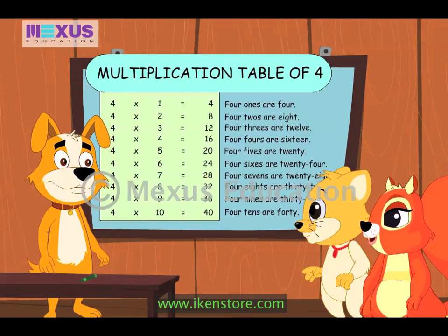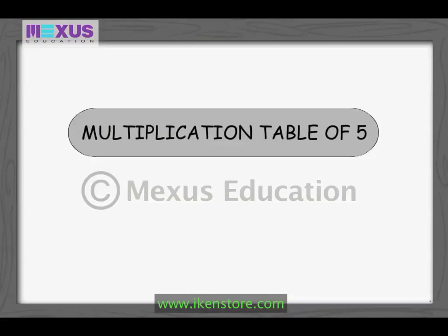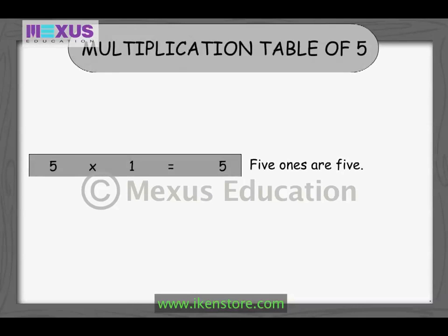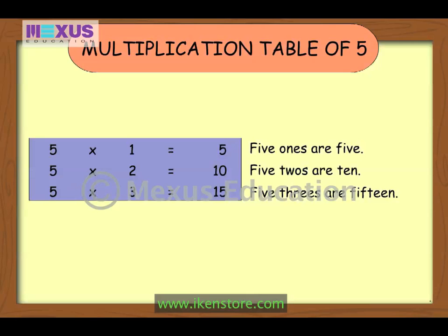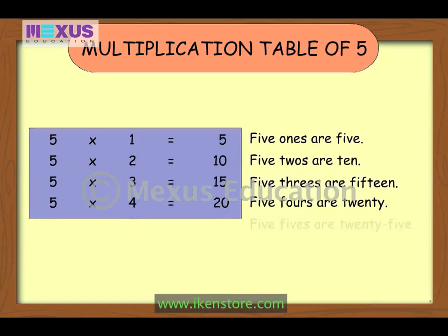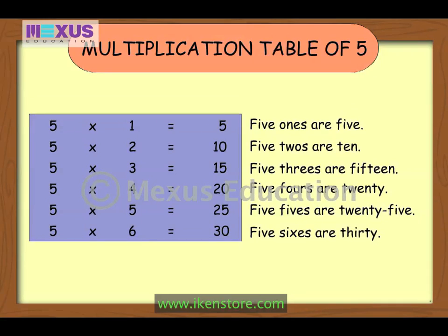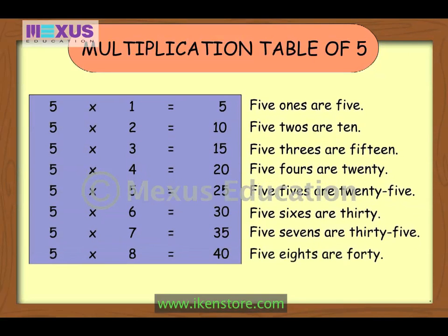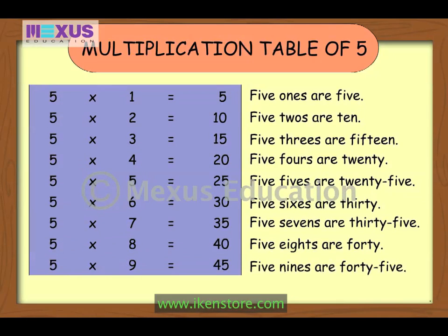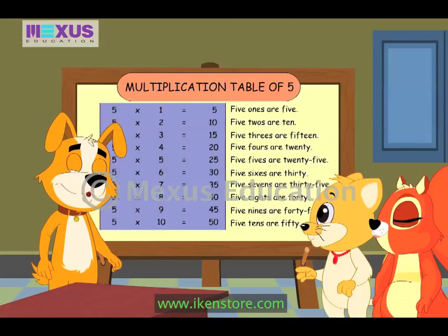Yes, I think we can do it Precious. Are you ready for the next one? Let's learn the table for 5. 5 ones are 5, 5 twos are 10, 5 threes are 15, 5 fours are 20, 5 fives are 25, 5 sixes are 30, 5 sevens are 35, 5 eights are 40, 5 nines are 45, 5 tens are 50. Hope it's clear.